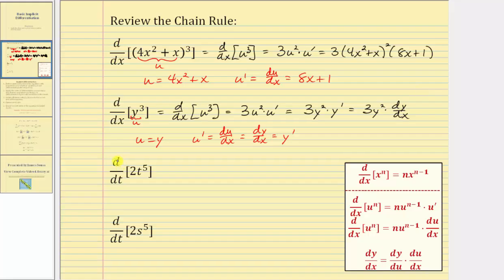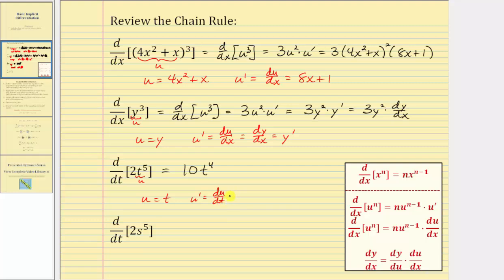Next we have the derivative of two t to the fifth with respect to t. Notice in this derivative the term is a t term and the input variable is also t, and therefore the chain rule is not required — we'd differentiate as we normally do. So the derivative of two t to the fifth with respect to t is just 10 t to the fourth. If we did apply the chain rule, it would not affect the derivative, because if we let u equal t, then u prime is du dt, and the derivative of t with respect to t is just one, so multiplying by one would not change the derivative.